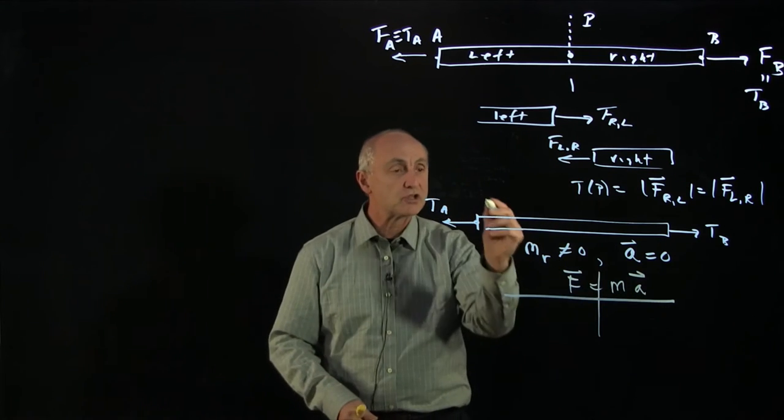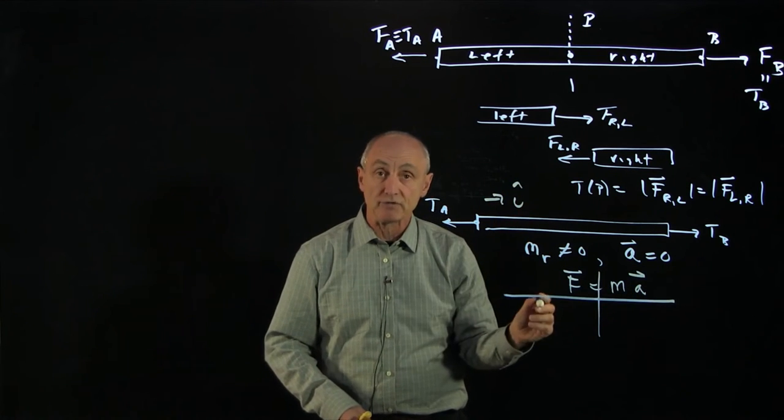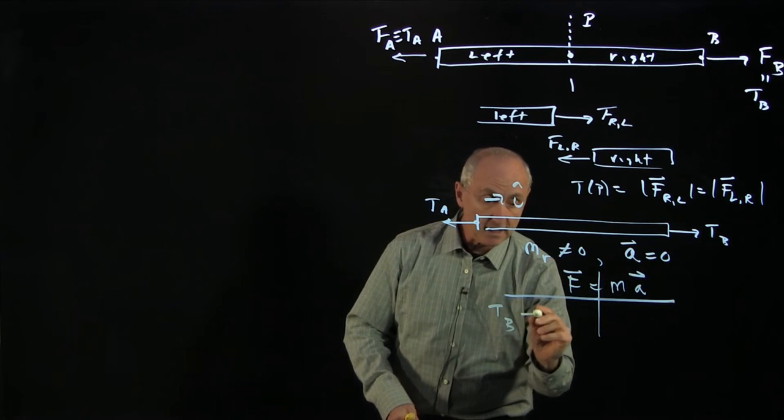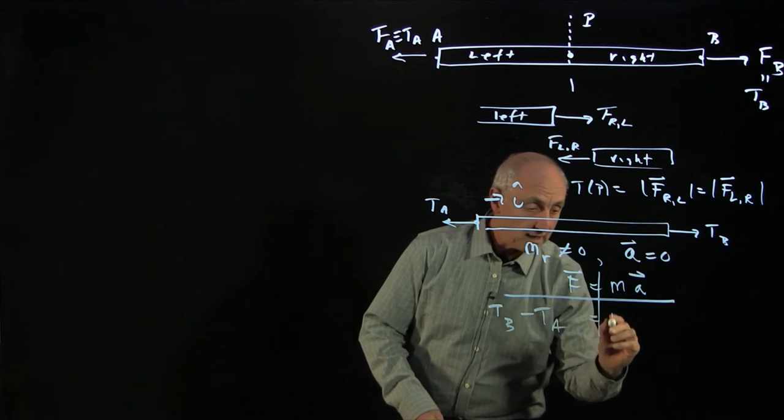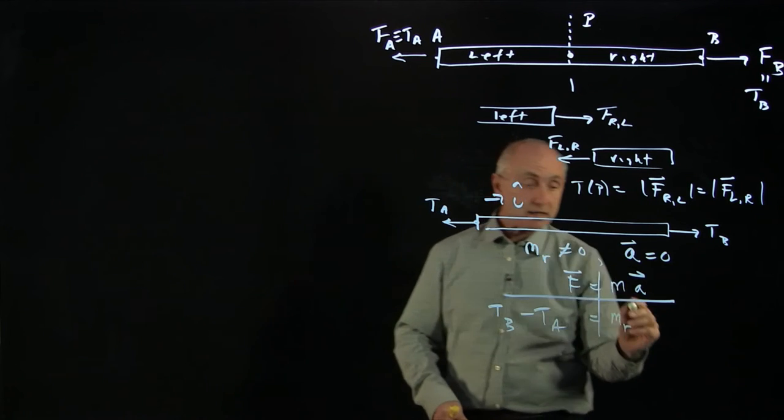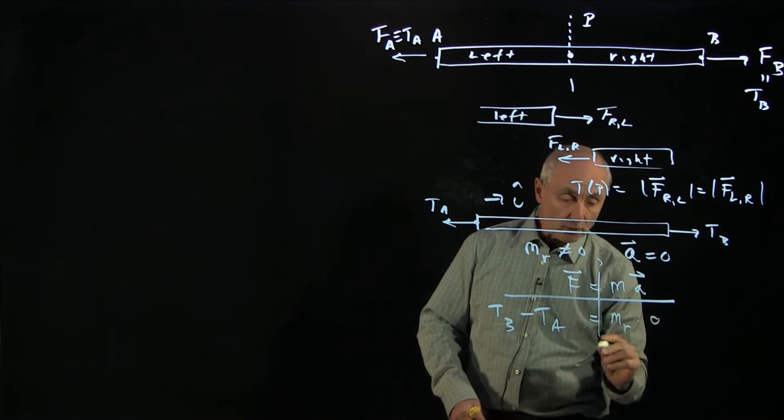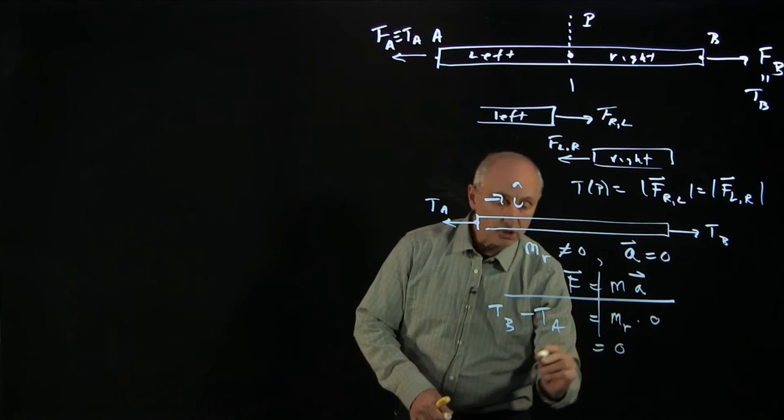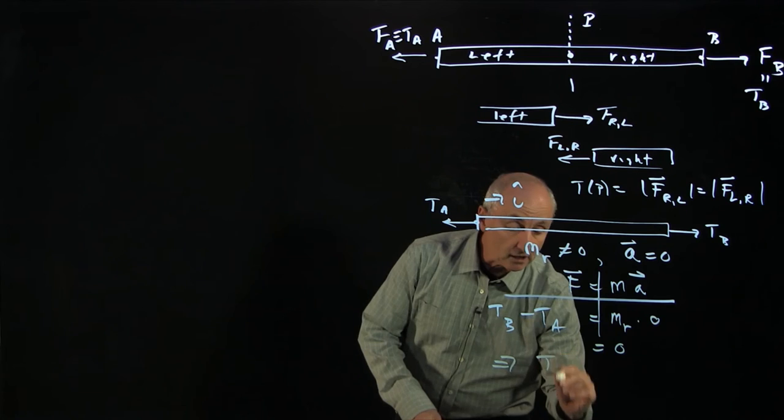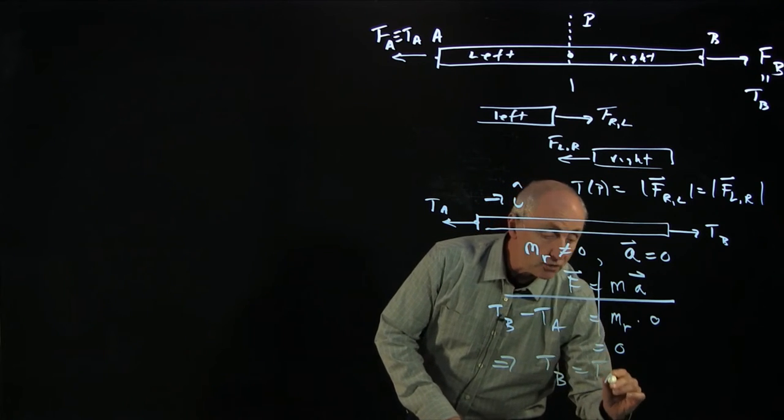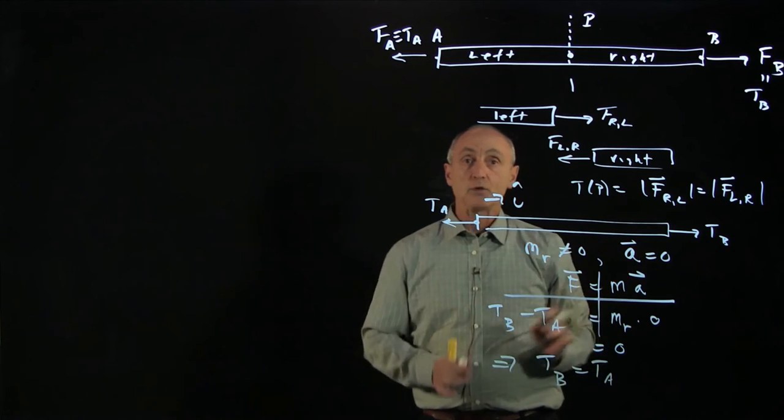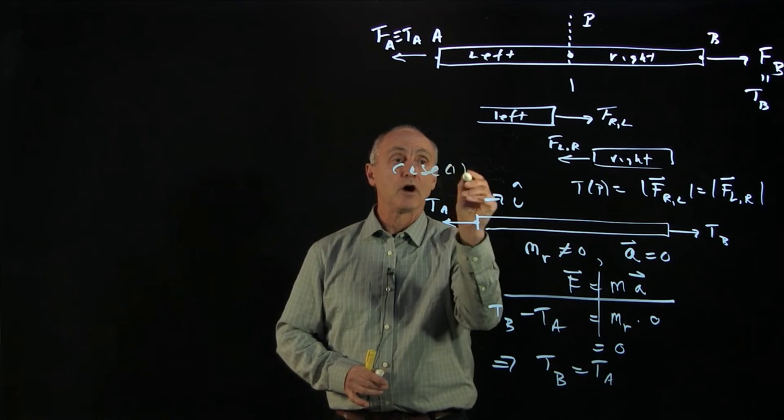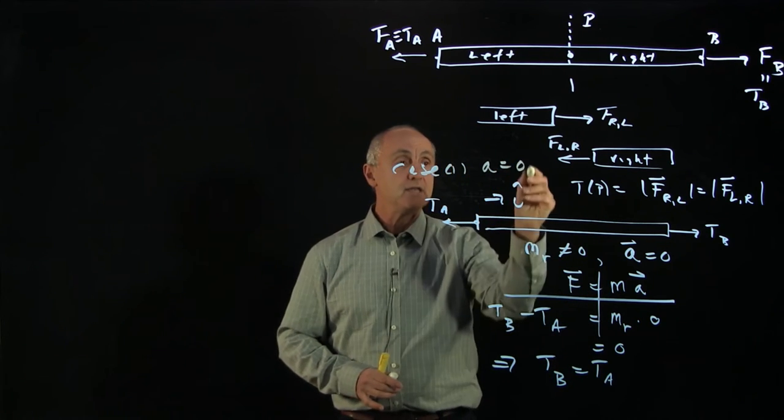And so what does that mean when we apply Newton's second law to the rope? Well, let's just arbitrarily call that our positive direction. We see by vector decomposition that we have TB minus TA equals mass of the rope. But because the acceleration of the rope is 0, this side is 0. And we can use Newton's second law to conclude that the tension in the rope is uniform when the rope is not accelerating. And this is what we'll call our case 1, A equals 0.